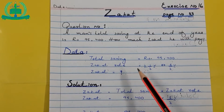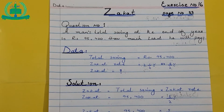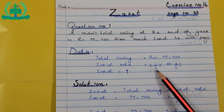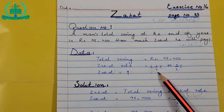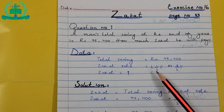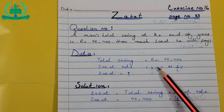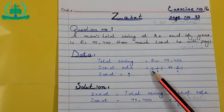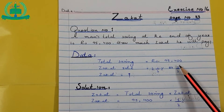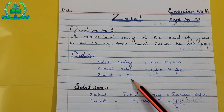Zakat rate is equal to 2 and 1/2%. We change the mixed number into an improper fraction — we multiply the denominator by the whole number and then add the numerator. 2 multiplied by 2 makes 4, plus 1 makes 5. So the rate is 5/2%. Zakat is equal to question mark.